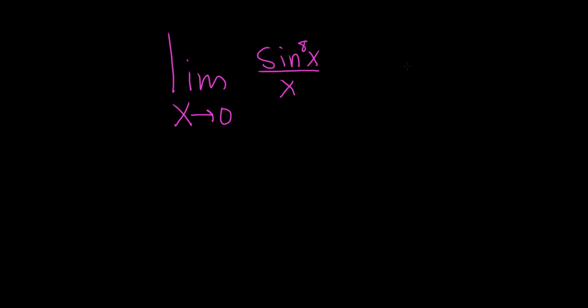So the strategy here is to use a formula. Recall that the limit as x approaches 0 of sine x over x equals 1. This is a really useful formula that we can use in this problem. So we have to somehow rewrite our limit to involve this.